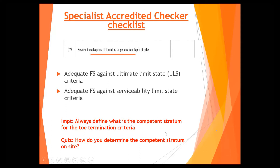Now my favorite question - I must ask this. Let's say today the designer says the pile must stop at SPT 100. The contractor is happily boring on site, and in your design, SPT 100 will be encountered at 30 meters below ground. When they reach 30 meters below ground and say 'this is SPT 100,' somebody has to confirm this. How do they confirm whether this is SPT 100 or 99, 79, 85? How do they confirm?